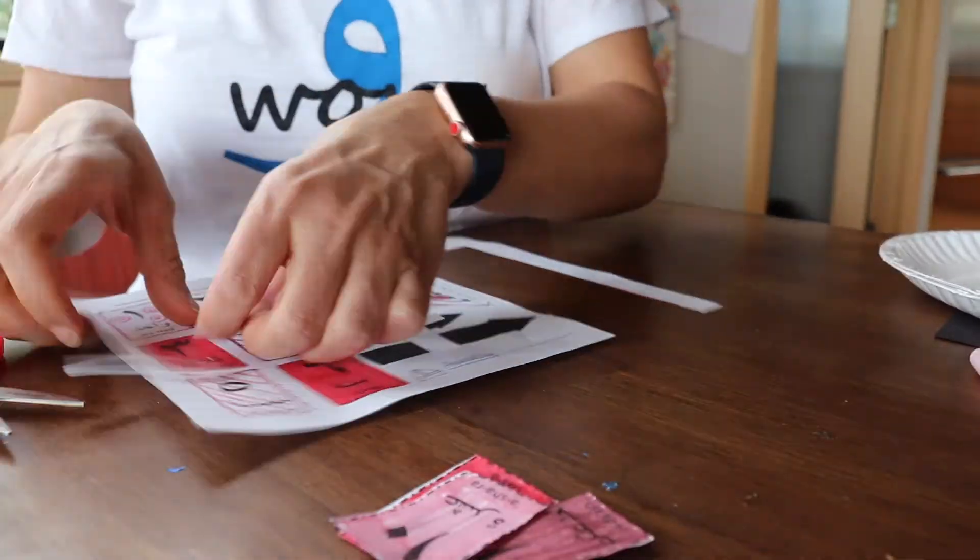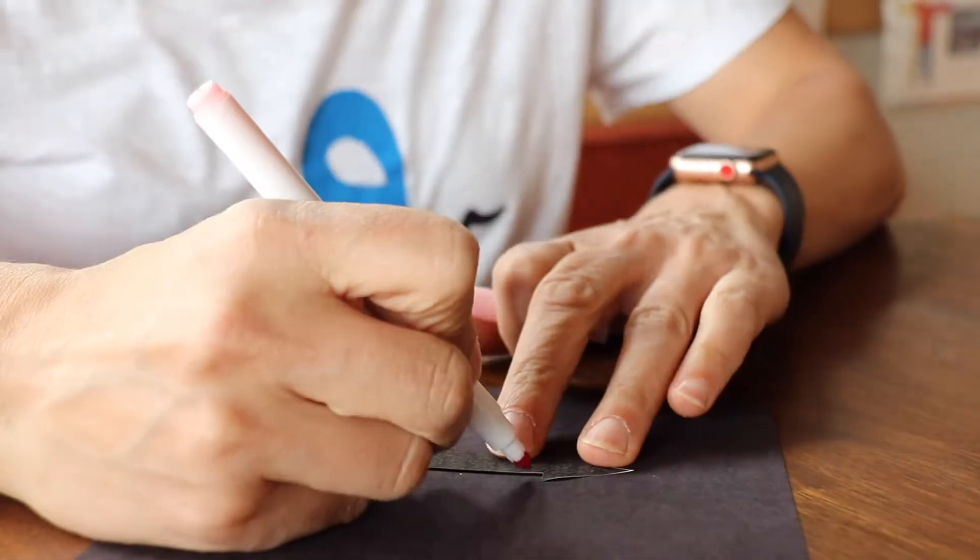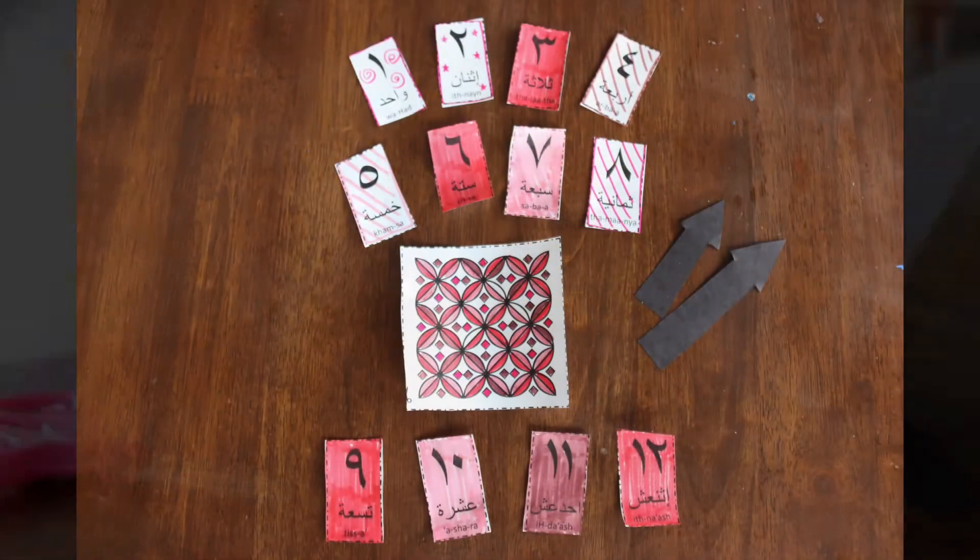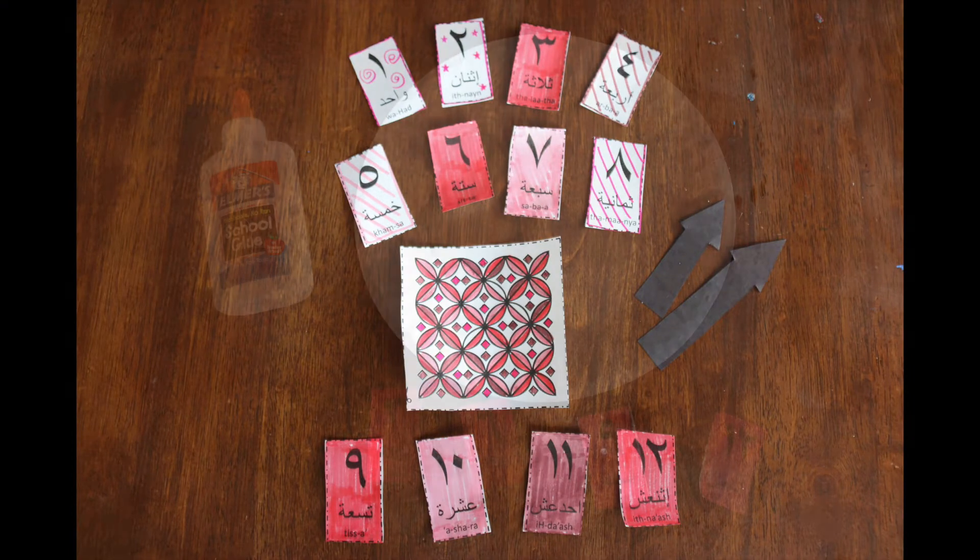And then for the arrows, if you print it on cardstock great, or you can take the paper that you have and trace it onto thicker, more sturdy paper like that and cut it out. And now that you have all your pieces, you are ready to glue them onto your paper plate or circle to make a clock.